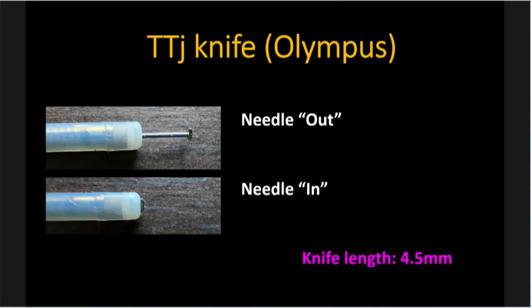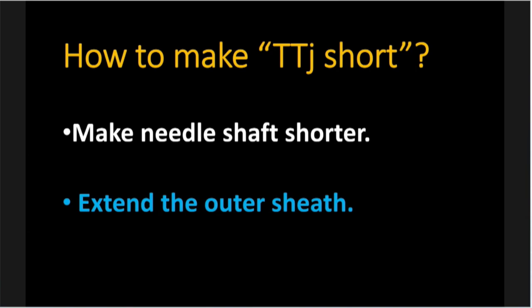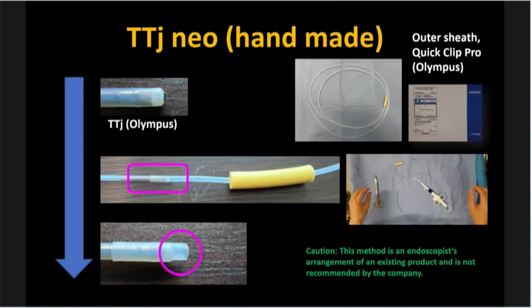My intention is to make the TTJ shorter. We have two options: make the needle shaft shorter — easy to say, but manufacturing requires making a new one — or, the second option is a very simple concept: extend the outer sheath. This is a handmade procedure. We cover the tip of the TTJ with the outer sheath of the Quick Clip Pro and push it. The left bottom shows it already fixed, then cut it with scissors — that's all.